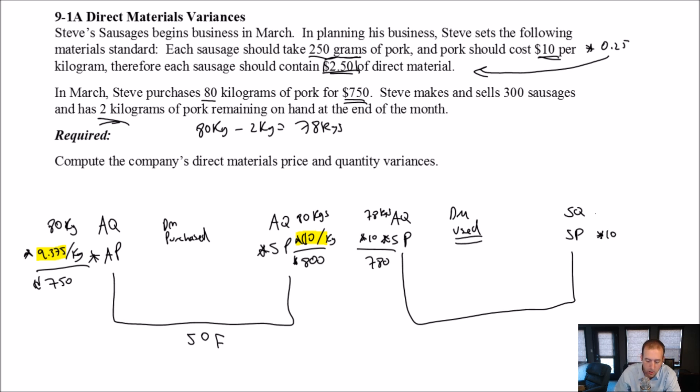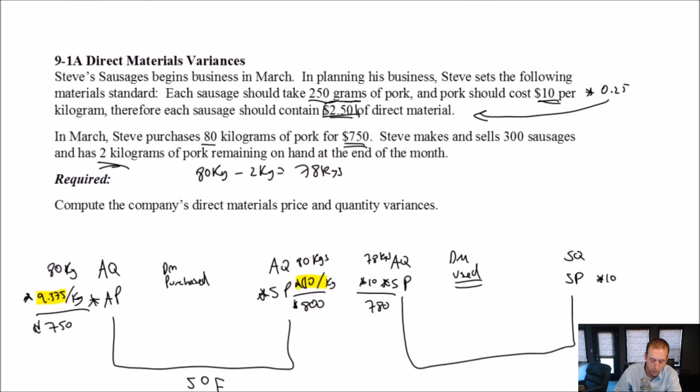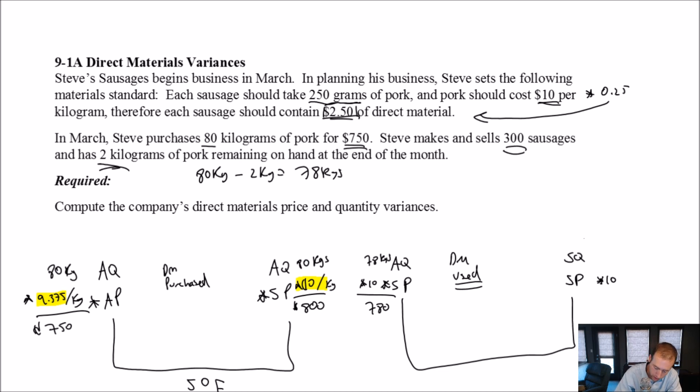My standard price here will be 10 again. My standard quantity answers the question: Given the actual number of units produced, how much direct material, direct labor, or overhead should have been used. So again, given the actual number of units you produced, how much material labor overhead should you have used? Well, in this case, it's material we're interested in. So how many kilograms of material should you have used? So Steve made 300 sausages. That's the actual level of output. That's the actual number of units produced. 300 sausages.